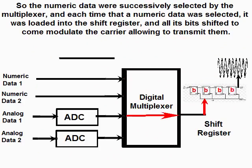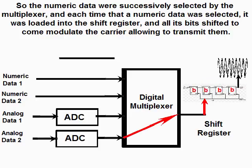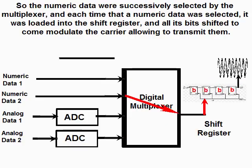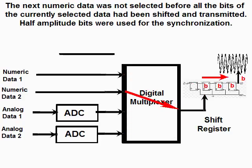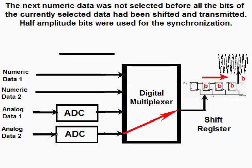The numeric data were successively selected by the multiplexer, and each time a numeric data was selected, it was loaded into the shift register and all its bits shifted to modulate the carrier, allowing them to be transmitted. The next numeric data was not selected before all the bits of the currently selected data had been shifted and transmitted. Half-amplitude bits were used for the synchronization.